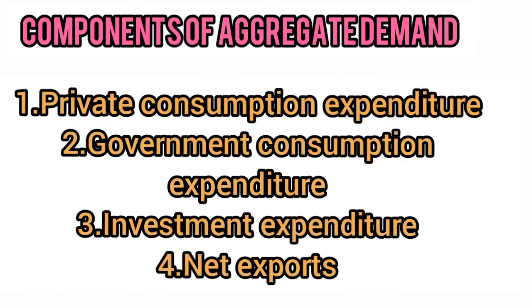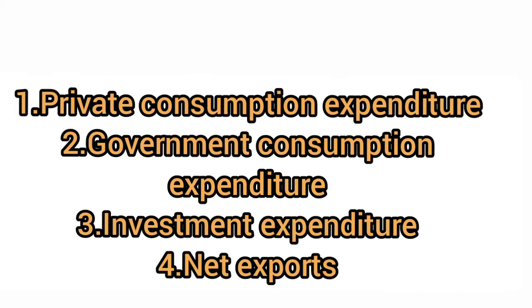Now we shall see what are the components of aggregate demand. Firstly, we have private consumption expenditure. Then we have government consumption expenditure — whatever is the government spending. Then we have investment expenditure. And the fourth one is net exports.